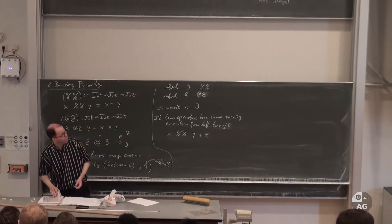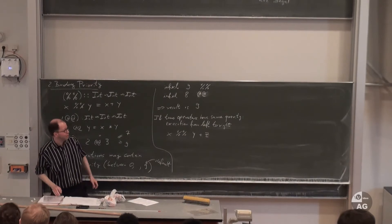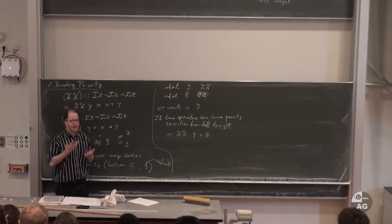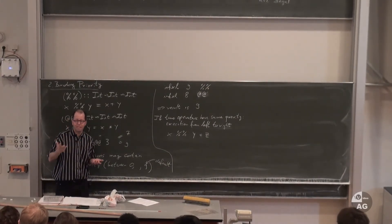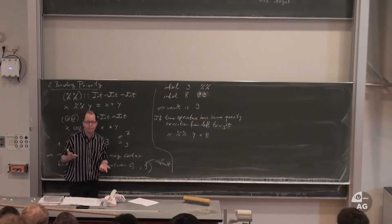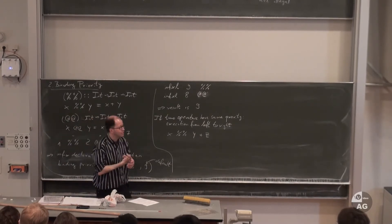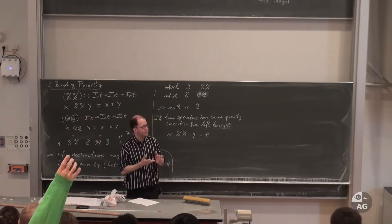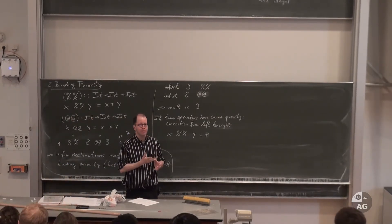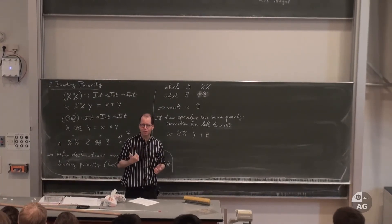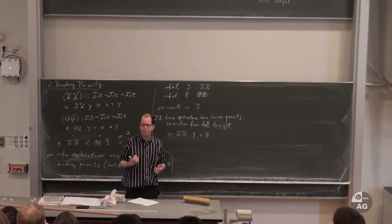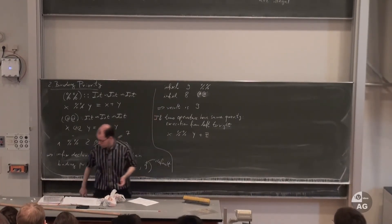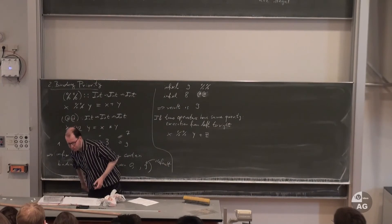That covers the concept of declarations. The four basic ingredients of Haskell are declarations, expressions, patterns, and types. We've now managed declarations, and now we move on to the next concept: expressions.